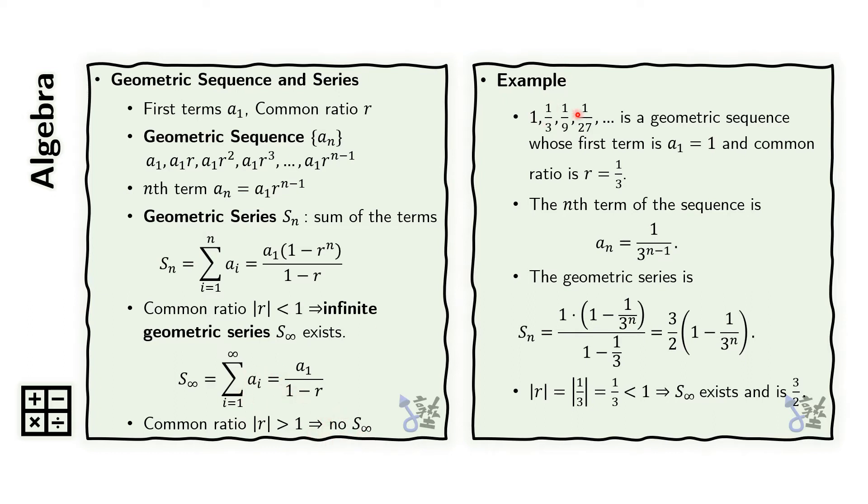For example, if we have this geometric progression, then the first term is 1, and the common ratio is 1 third. The nth term of this sequence is this,